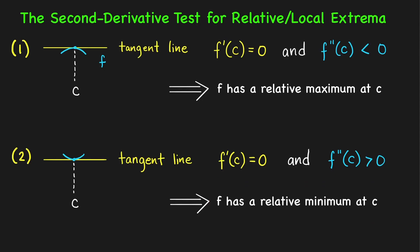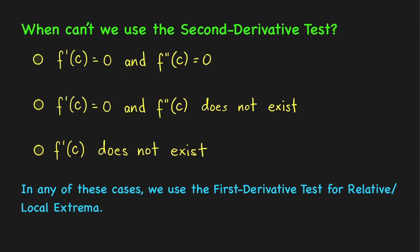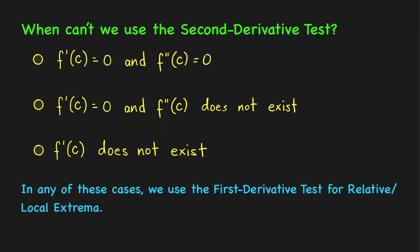Before we give examples on how to apply the second derivative test in finding relative extrema, let us first discuss the cases where we cannot use it. First case: when the first derivative and second derivative are both equal to zero, the second derivative test is inconclusive. Second case: even if the derivative is equal to zero, when the second derivative does not exist, we cannot apply the second derivative test.